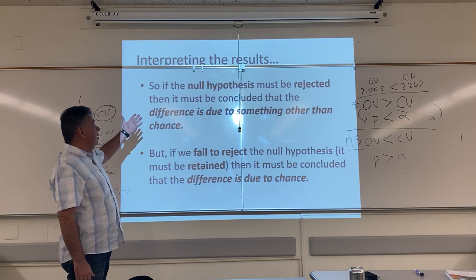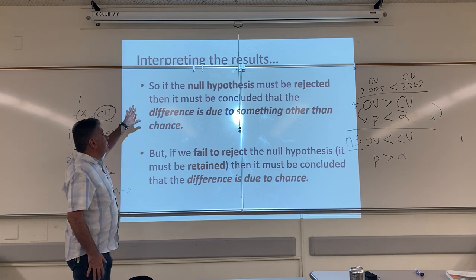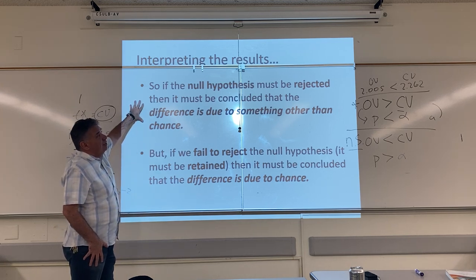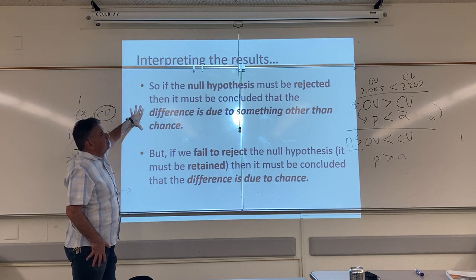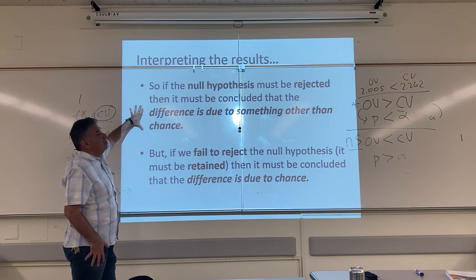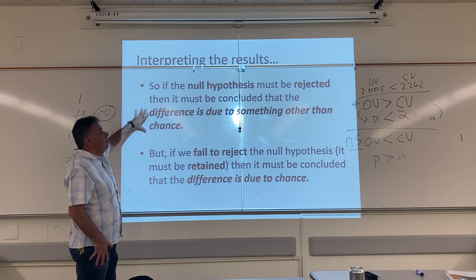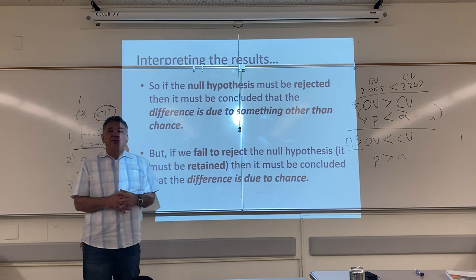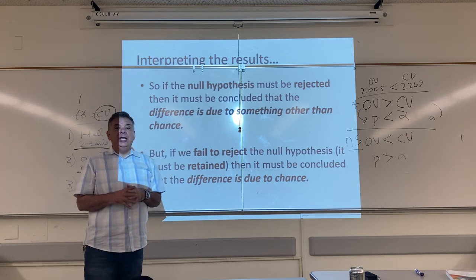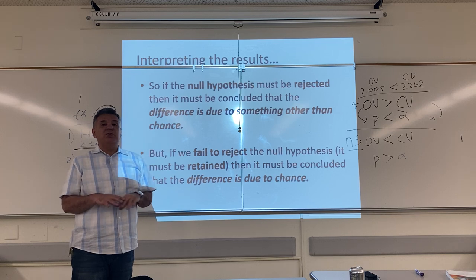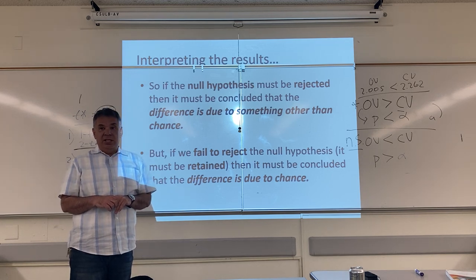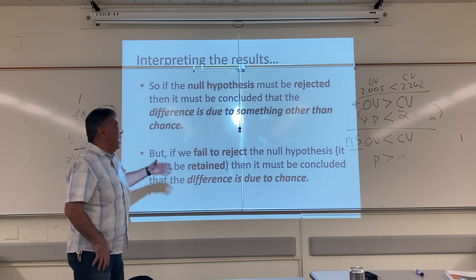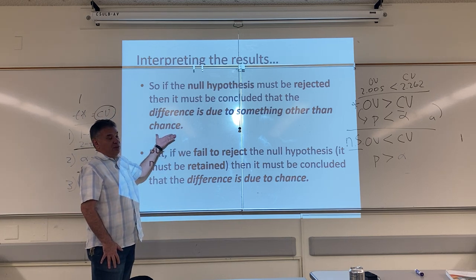How do I interpret the results? If the null hypothesis must be rejected, then it must be concluded that the difference is due to something other than chance. In other words, we believe the two groups really are different, and whatever made the two groups different at the beginning of the study — that's what we call the systematic influence — that's the reason why there's a difference.